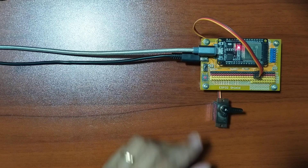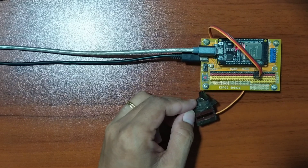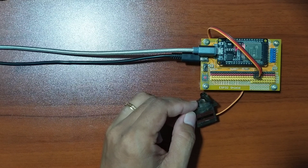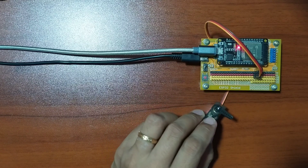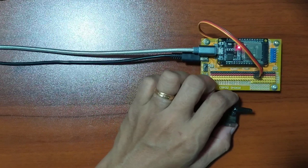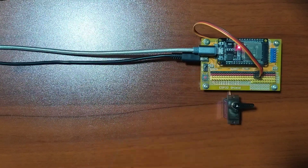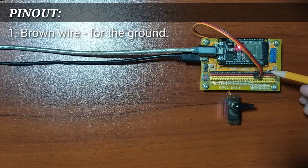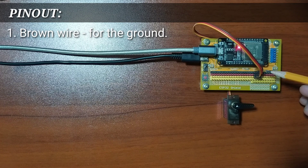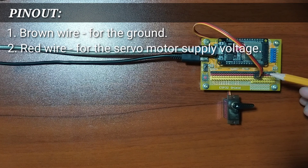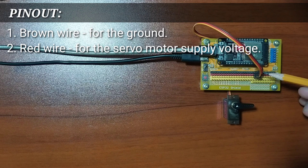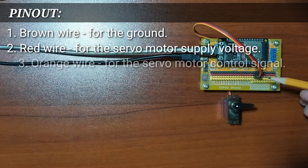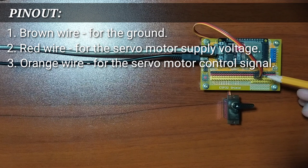What I have here is an MG90S servo motor included in the GorillaCell ESP32 development kit. It has three wires: the brown wire for the ground pin, the red wire for the servo motor supply voltage, and the orange wire for the servo motor control signal pin.